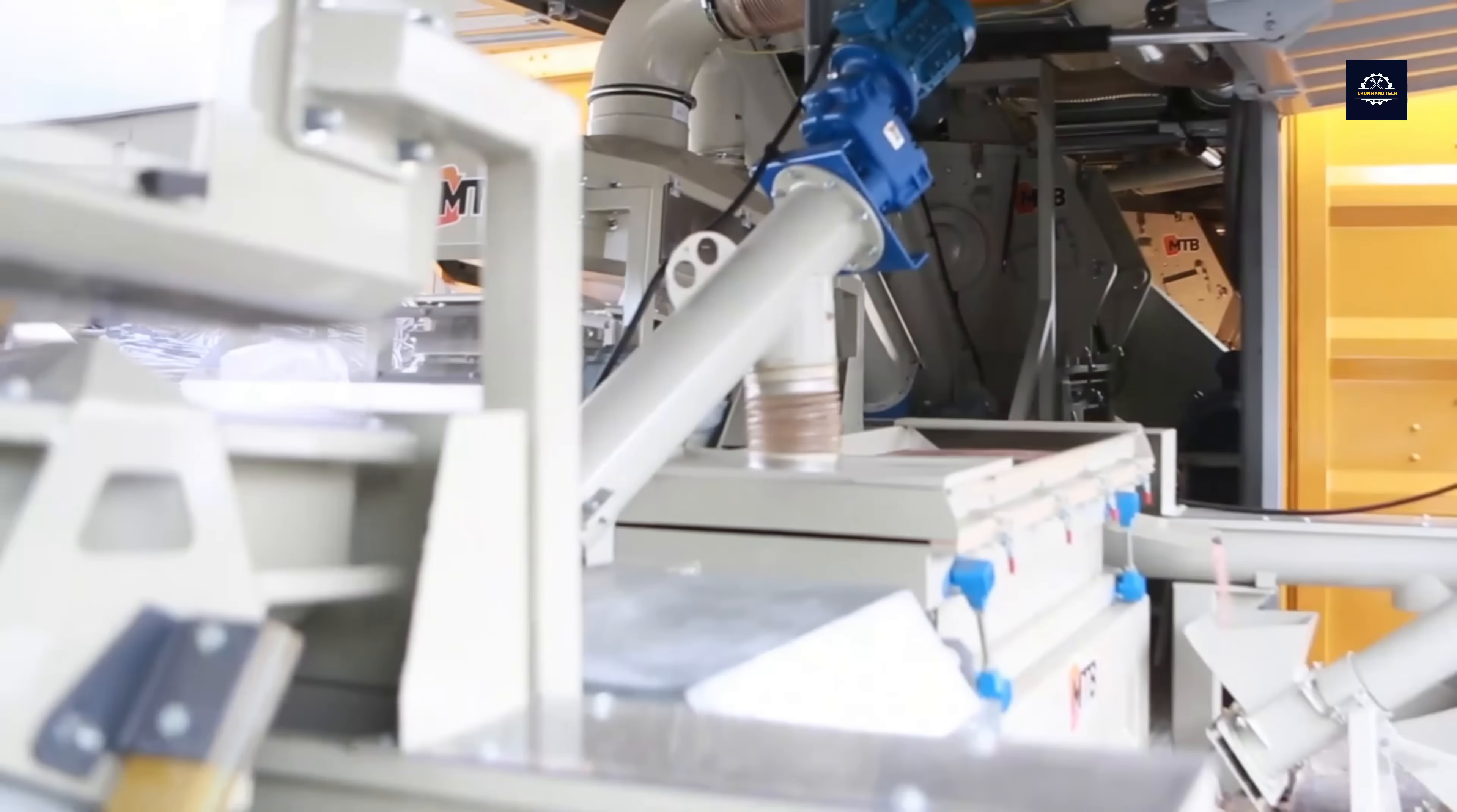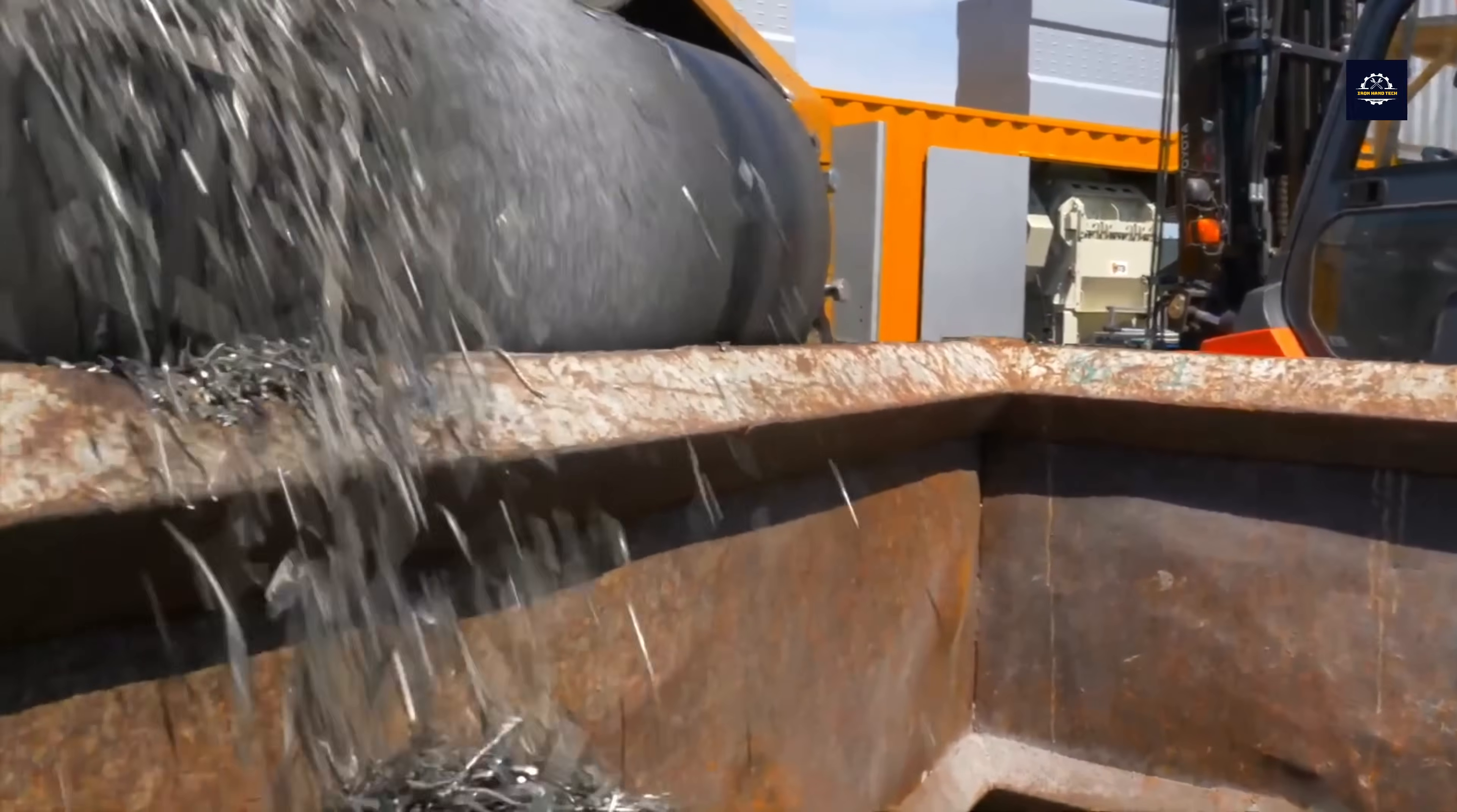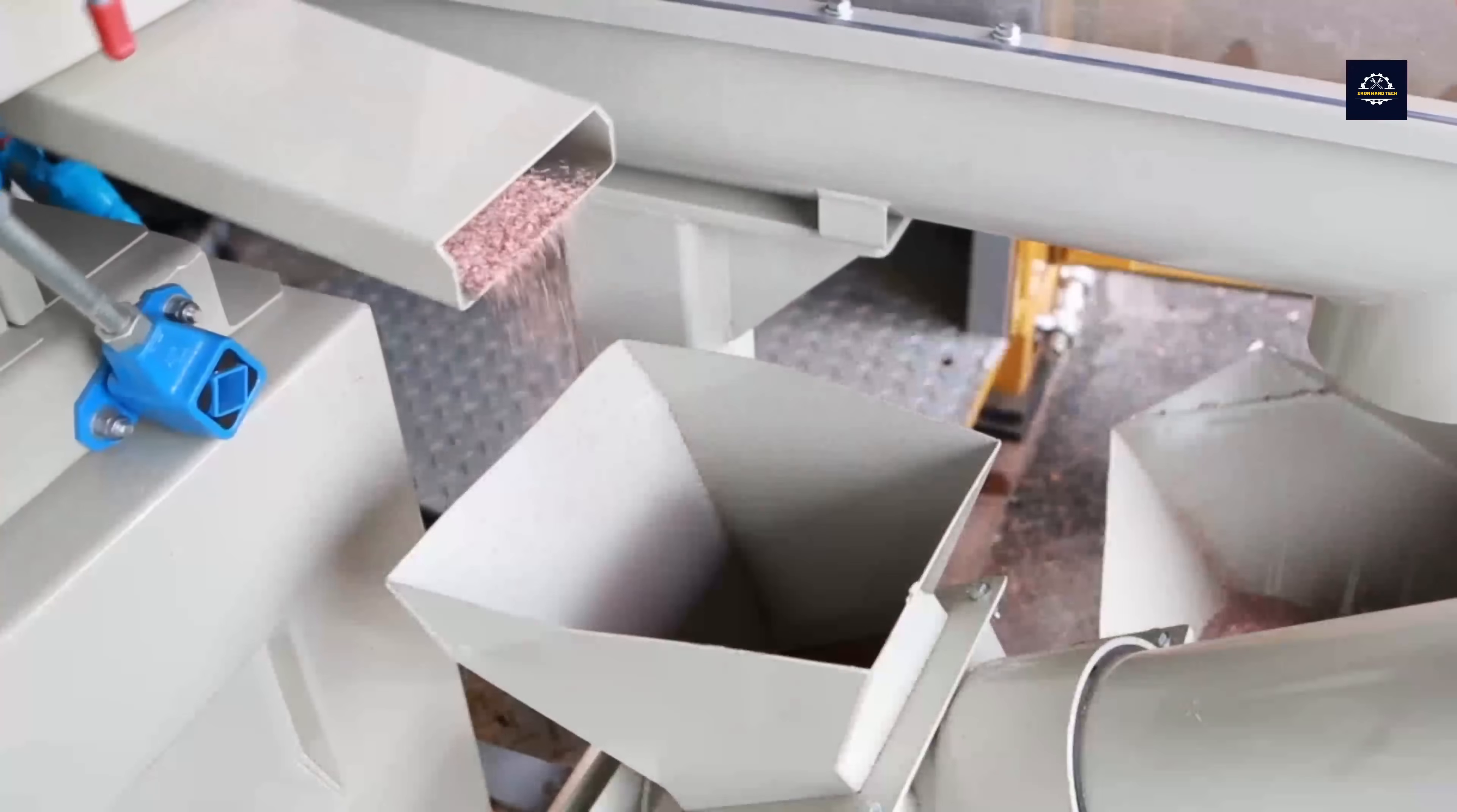But the process isn't over yet. To achieve pure copper, we need another step. The copper is passed through a magnetic separator, which captures metallic impurities while leaving the copper untouched. After this step, we have pure copper ready for the melting process.